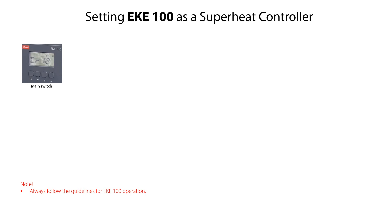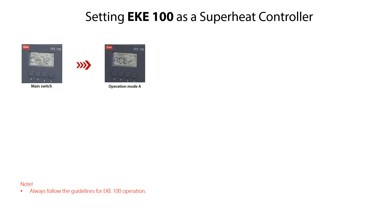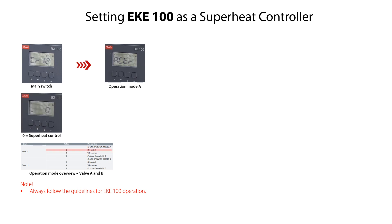The first step in the EKE100 configuration is to set it either as a superheat controller or as a valve driver. To set the EKE100 as a superheat controller for valve A, from the main switch CR12 mode, press the arrow down key to access the operation mode A, specified as ACTR. Press the enter key to access the available operating modes. The value should be set as 0 for superheat control. Press the arrow up or arrow down key to get the needed value, then press the enter key to confirm value 0 and return to the ACTR mode.